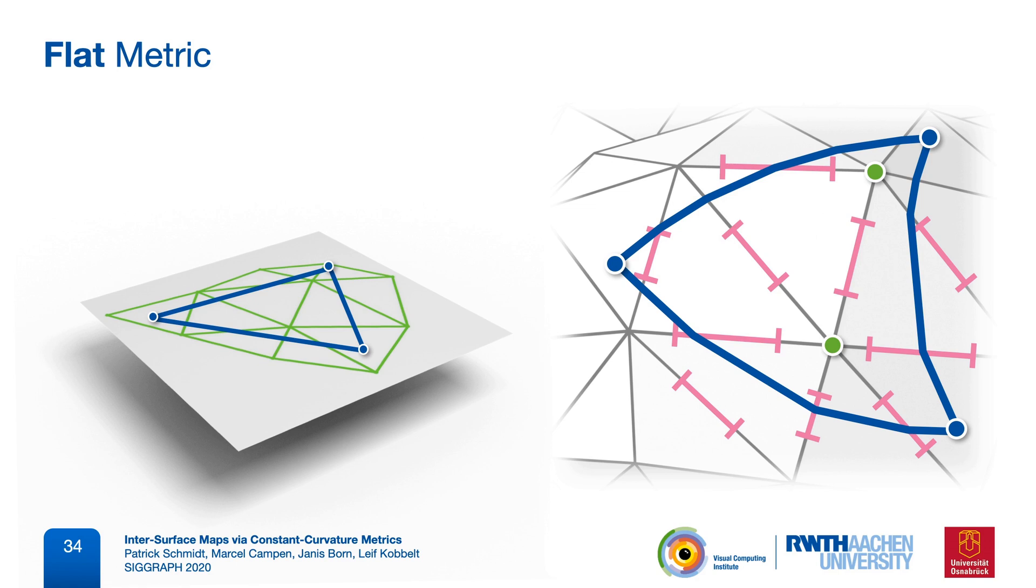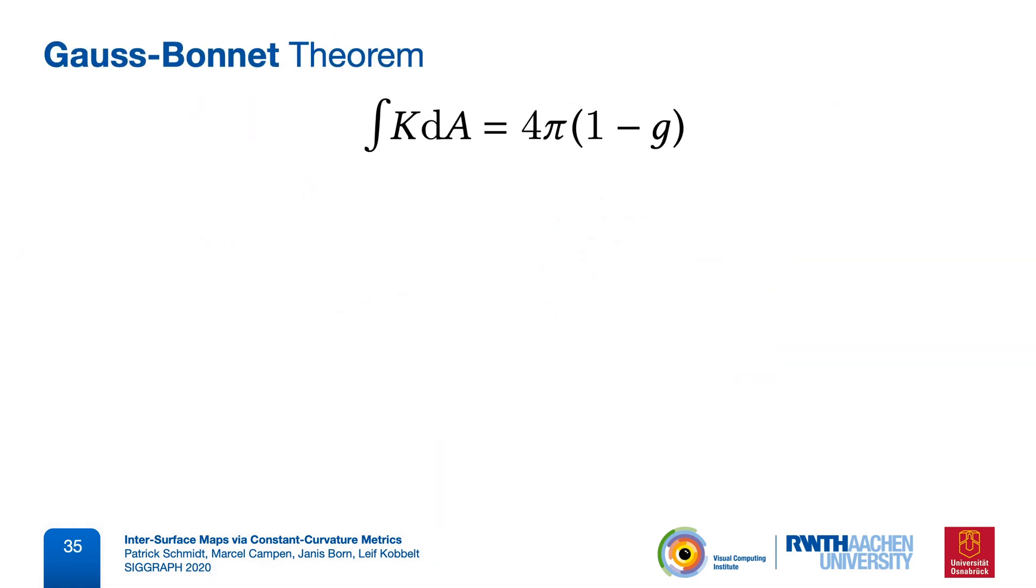So is our problem solved? Not really, because this is not going to work in a globally consistent way. Assigning a flat metric to a closed surface is not possible in general. And we know this because of the Gauss-Bonnet theorem, which relates the total Gaussian curvature to the genus of an object.